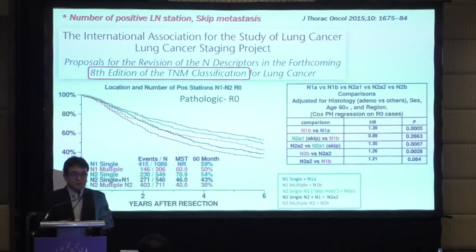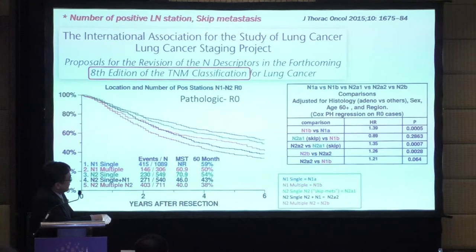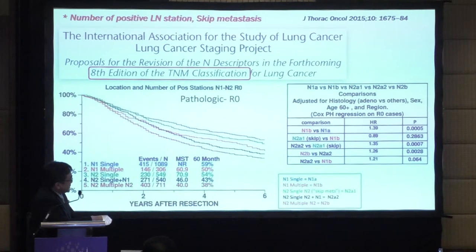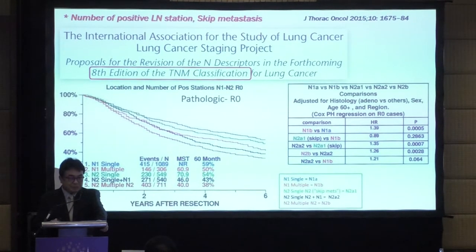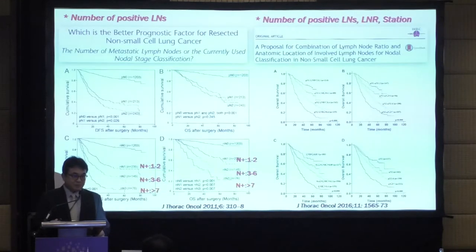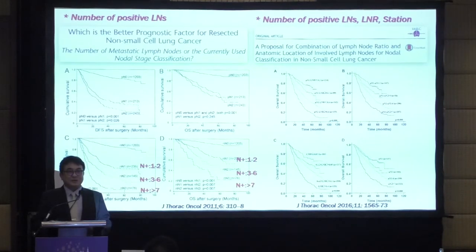Other papers show the number of stations matters. The best outcome is N1 single, then N2 single — this group shows better prognosis than N1 multiple. We have many scientific publications we can follow for this classification. Papers also address the number of metastatic lymph nodes and how many stations have metastasis. This classification can become complicated, so it's just a reference.